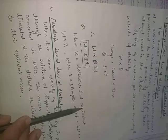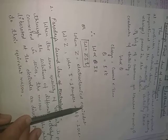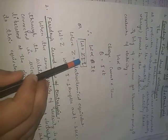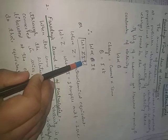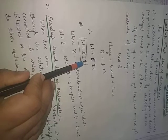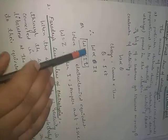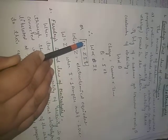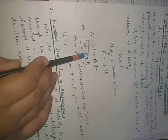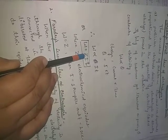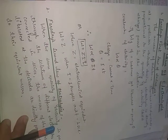When the proportionality sign is removed with a constant Z, it is called the electrochemical equivalent. So W = Z×I×T. If one ampere current flows for one second, the amount deposited equals the electrochemical equivalent Z. This was Faraday's first law of electrolysis.